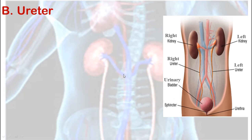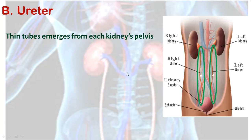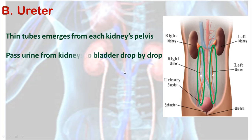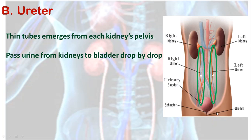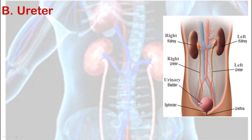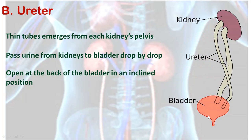We have two ureters, right and left, and they are very thin tubules emerging from the kidney's pelvis. They pass urine from the kidneys to the urinary bladder drop by drop. Kidneys don't store urine — each drop of urine formed in the kidney is transferred directly through the ureter to the urinary bladder. They open at the back of the urinary bladder in an inclined position.